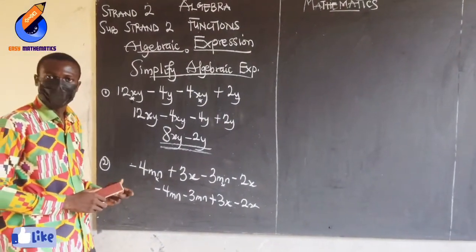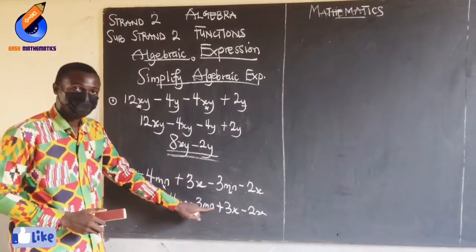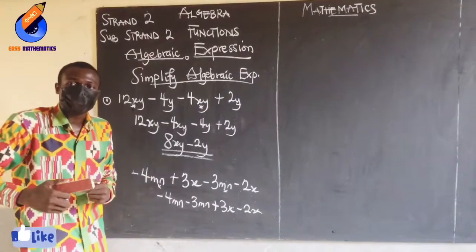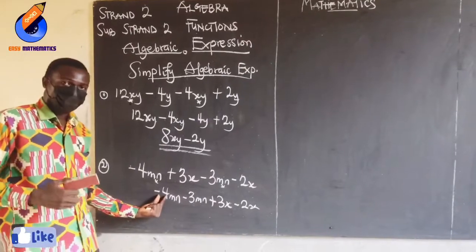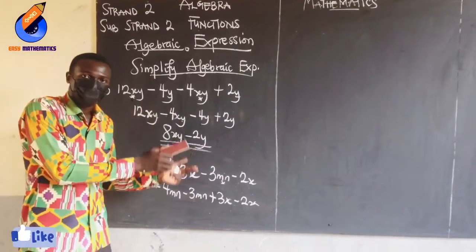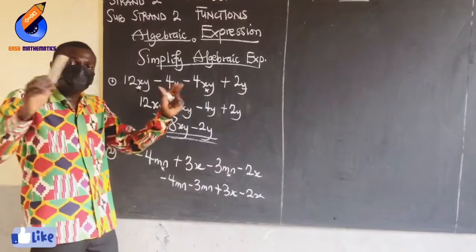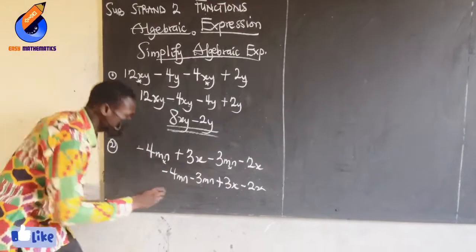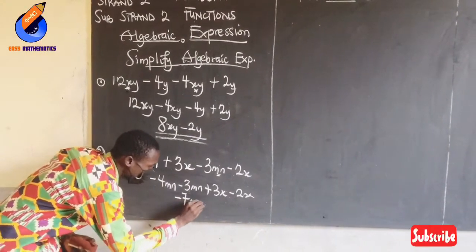Now when I am done, what do I do? Look at mn and mn — they have the same variables. When you see a negative in front of a number it means you are owing. So here we owe 4 and we owe another 3. When you put it all together, you are owing 7. So this gives me negative 7mn.